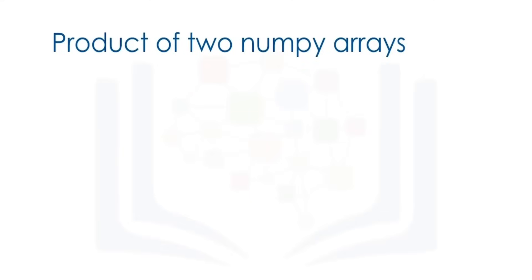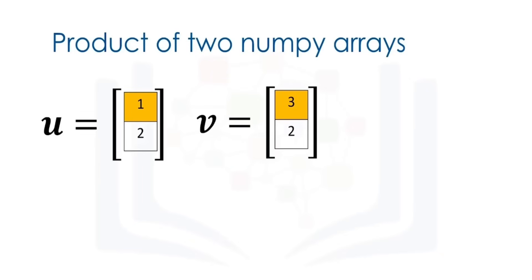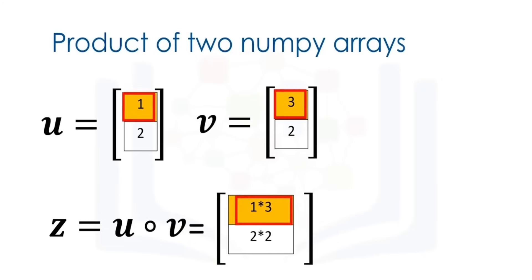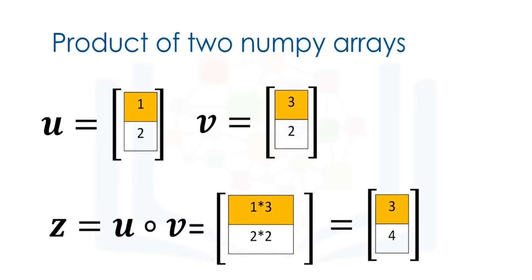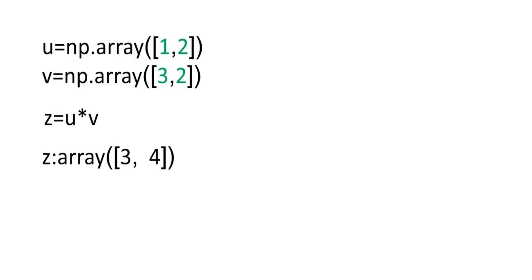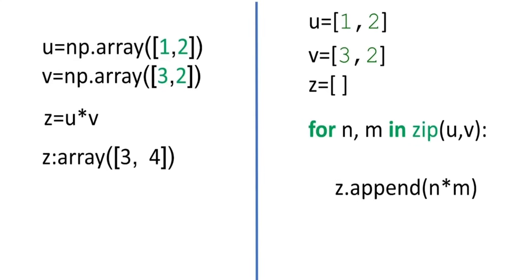Hadamard product is another widely used operation in data science. Consider two vectors u and v. The Hadamard product of u and v is a new vector z. The first component of z is the product of the first elements of u and v, and the second component is the product of the second elements. The resultant vector consists of the entry-wise product of u and v. We can perform the Hadamard product with one line of code in NumPy, compared to multiple lines with Python lists.